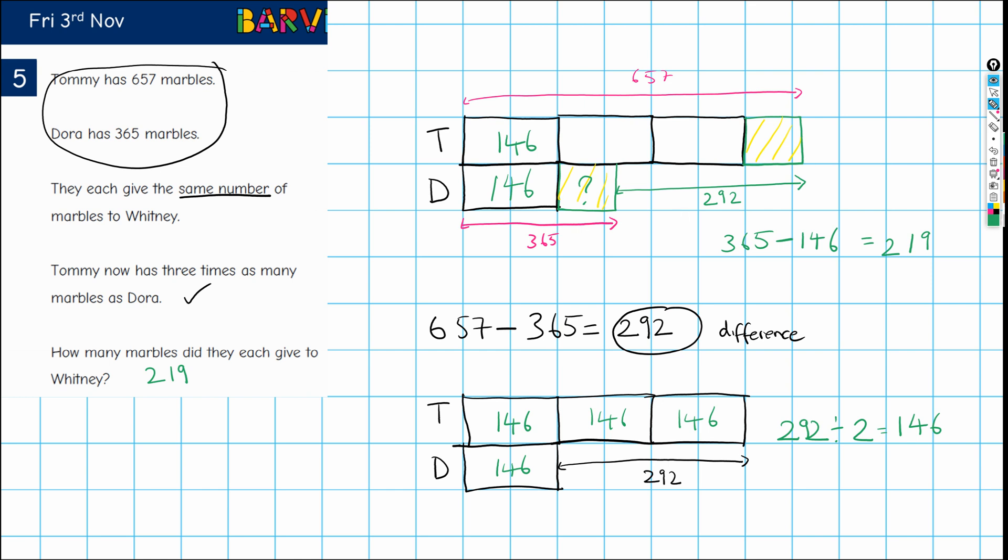And that is our answer. 219 is what each of them gave to Whitney. So this is 219 as is this. Hope that helps.